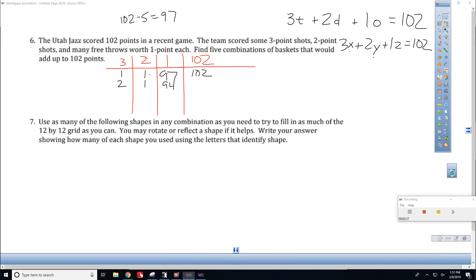So the general idea is plug in whatever you want for twos and threes, and then solve for how many free throws are left. What if we scored 10 threes? That's 30. 10 twos, that's 20. That brings us to 50. That means we had 52 free throws left.